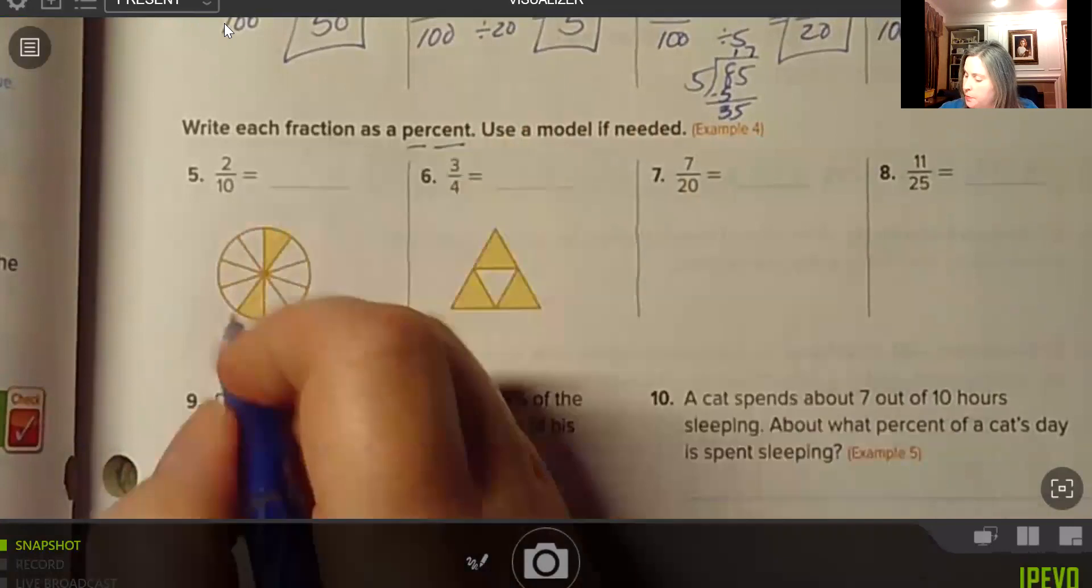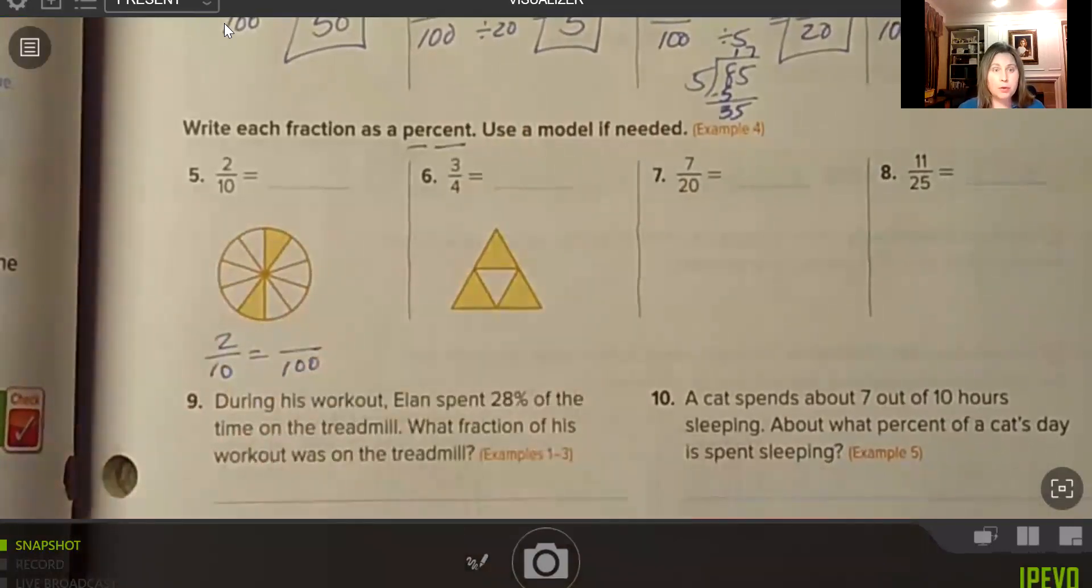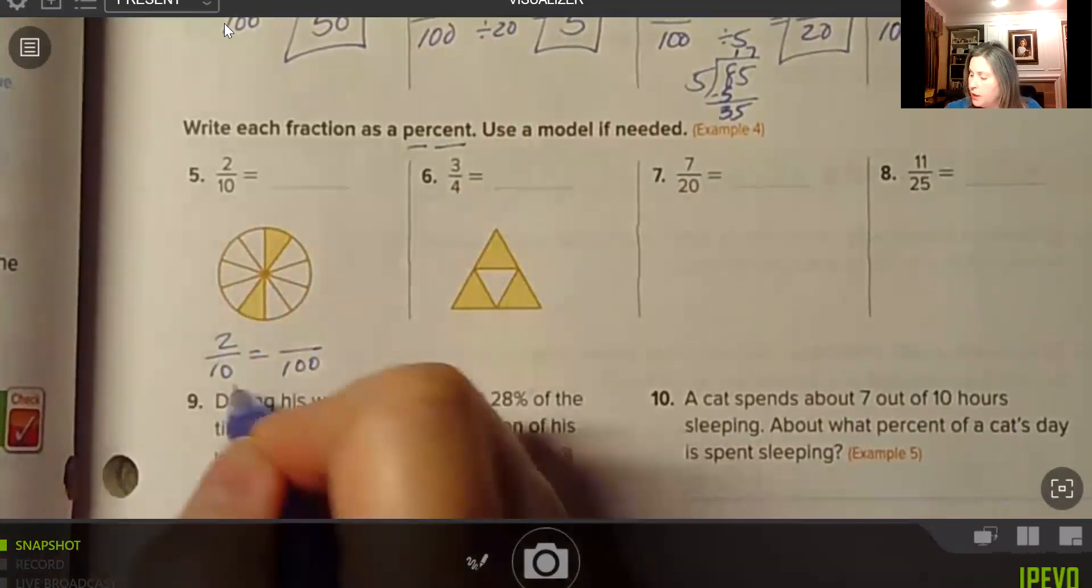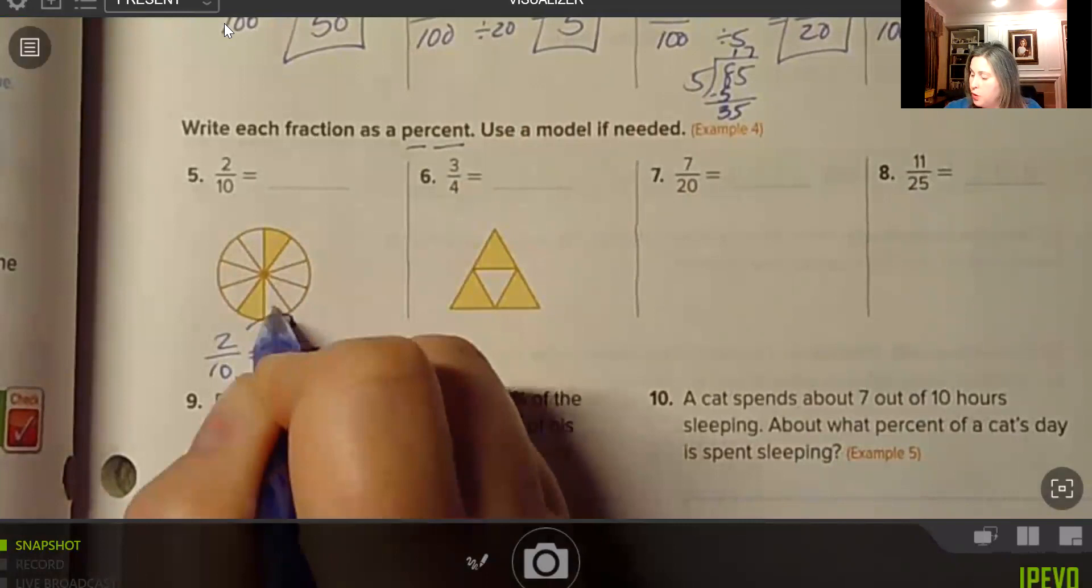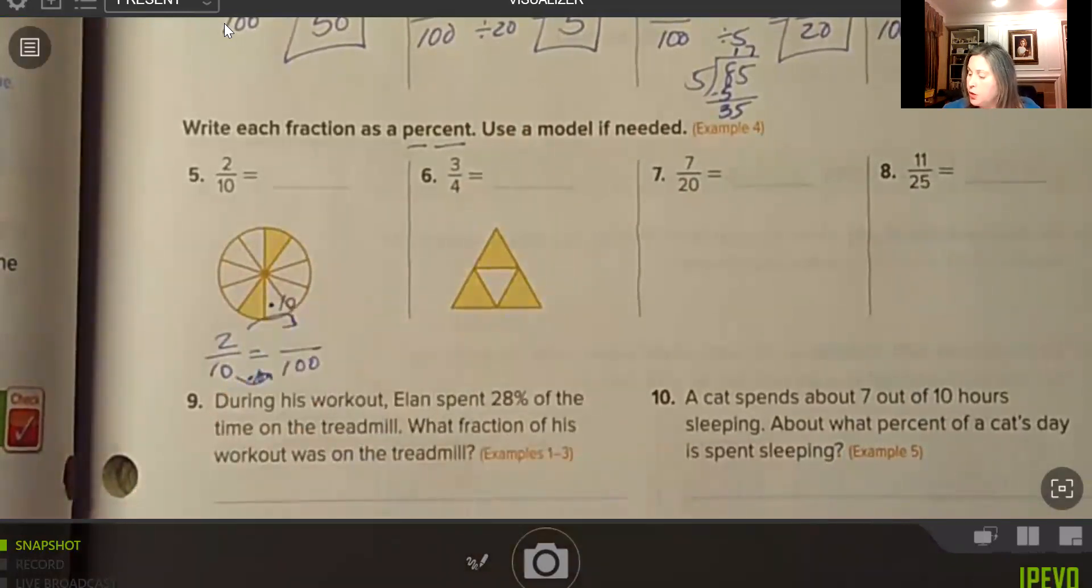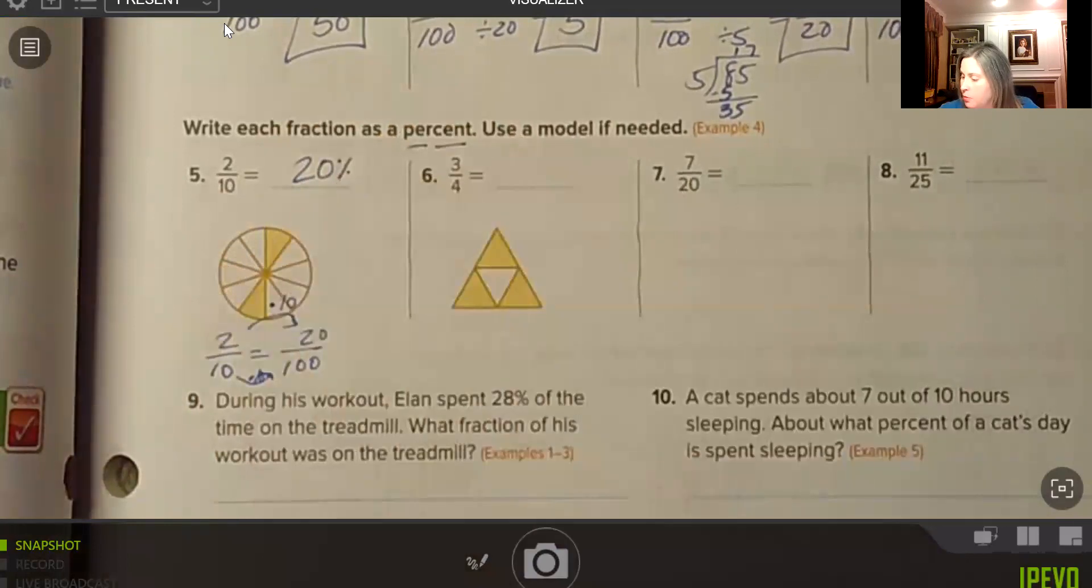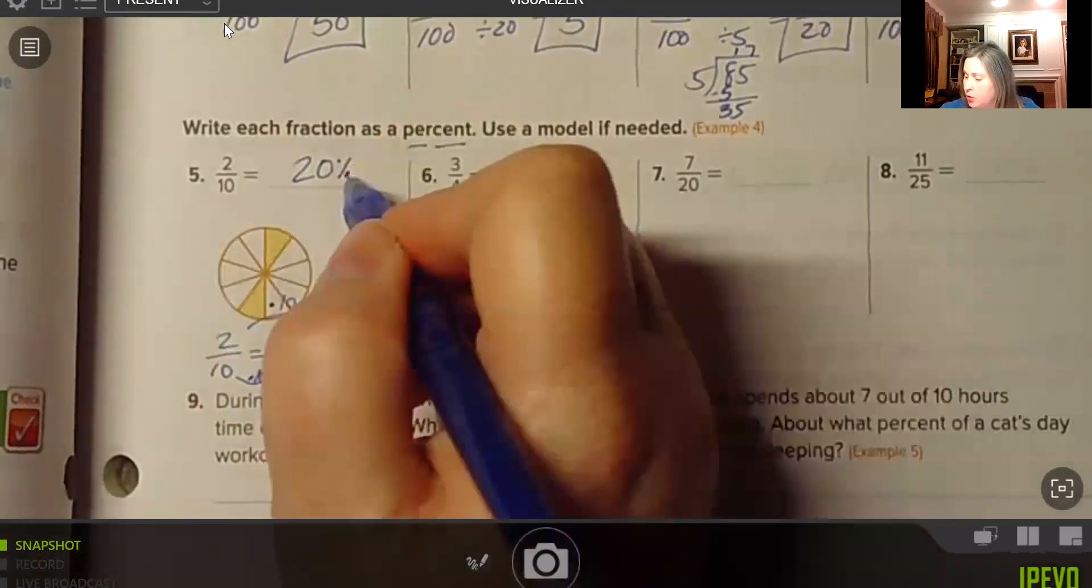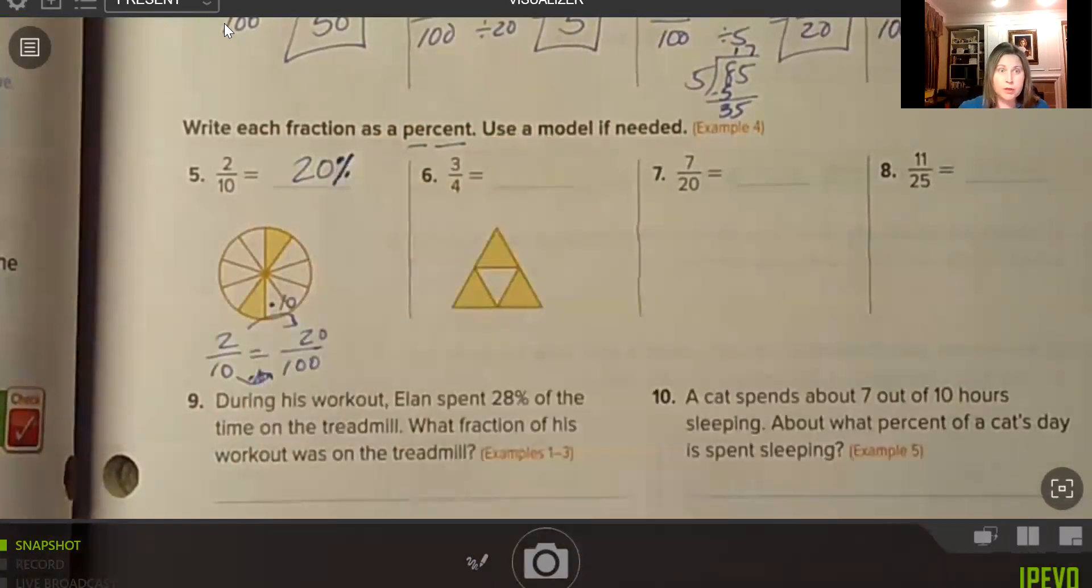So 2/10 would be how many per hundred or how many percent. So to get from 10 to 100, we multiply by 10. So to get from 2 to our new numerator, we also need to multiply by 10. So 2 times 10 is 20. So we get 20 per hundred, which is 20%. And remember the percent sign, the diagonal goes from the top right to the bottom left, kind of like the number 7 goes down.